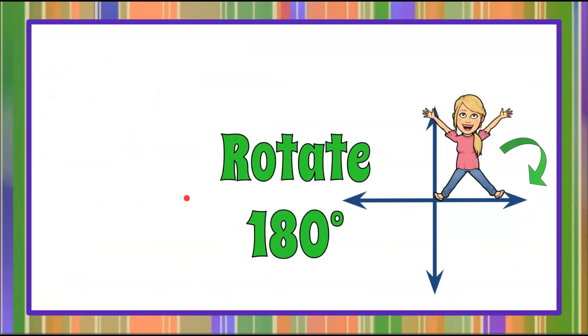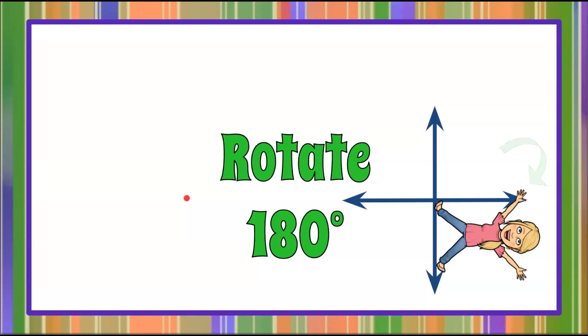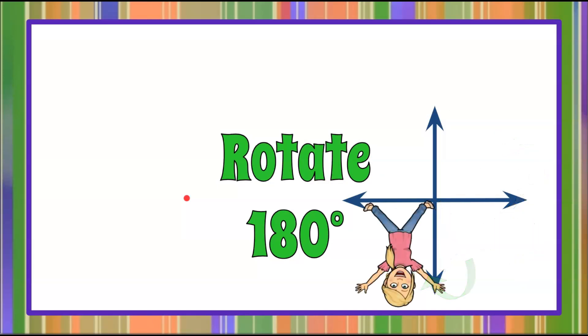And there you have it. That is how we rotate 180 degrees about the origin in a coordinate plane. That's my tip for today. Turn your paper or your computer to determine the ordered pair.